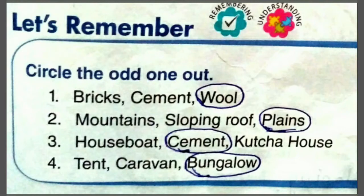First set: bricks, cement and wool. तो इसमें से अलग कुन सा है? Wool. क्योंकि bricks और cement पका house बनाने में use होता है, और wool में से cloth बनता है, इसलिए ये तीनों में से wool अलग है.